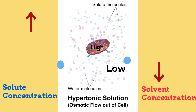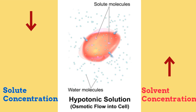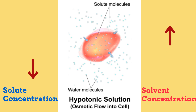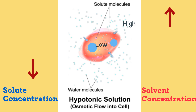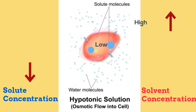In a hypotonic solution, such as distilled water, the solute decreases. Therefore, the concentration of the solvent increases. Water flows from high to low, so it flows from outside of the cell into the cell, because there's a lower concentration in the cell.